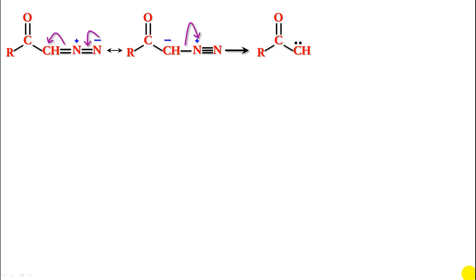So this is a carbene. This undergoes rearrangement — it is a rearrangement in which R attacks the carbene carbon and the pi bond attacks the carbonyl carbon. You get a rearrangement and the product is called a ketene.